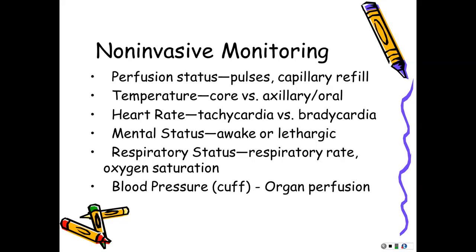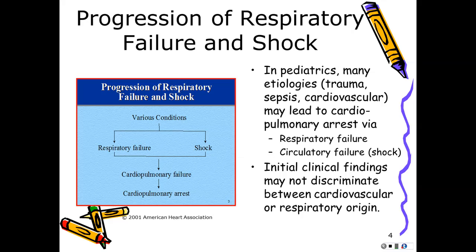The other big things to watch are heart rate — kids will get tachycardic pretty quickly — and mental status, their level of consciousness. They can go unresponsive, or become irritable or lethargic very quickly. We need to keep kids as good as we can find them and as good as we can keep them. Respiratory failure and shock are the two reasons kids die, which is why pediatric nurses are like rabid dogs when it comes to respiratory assessment.